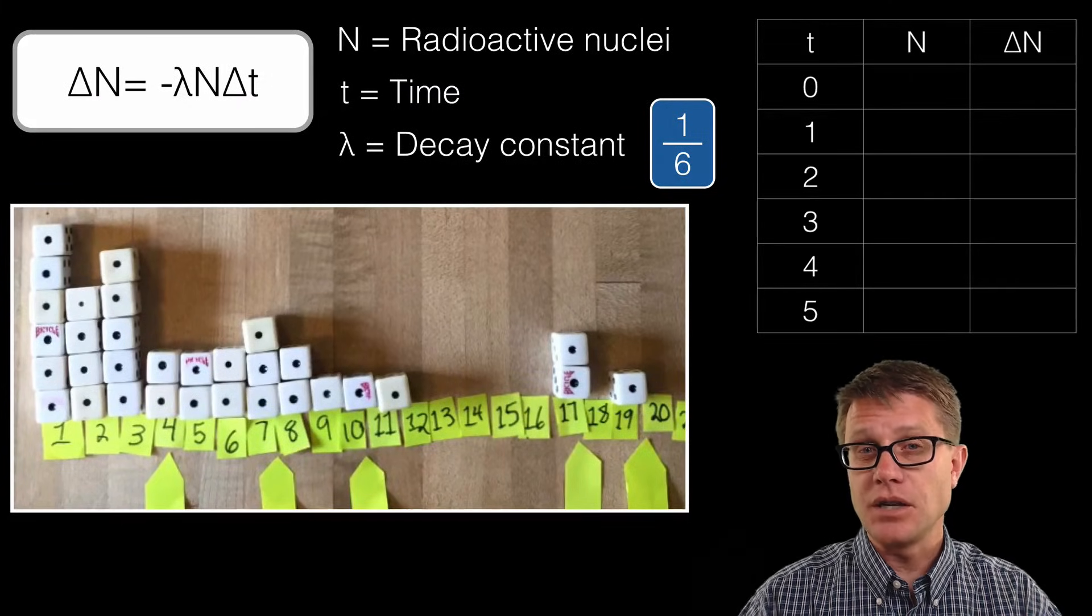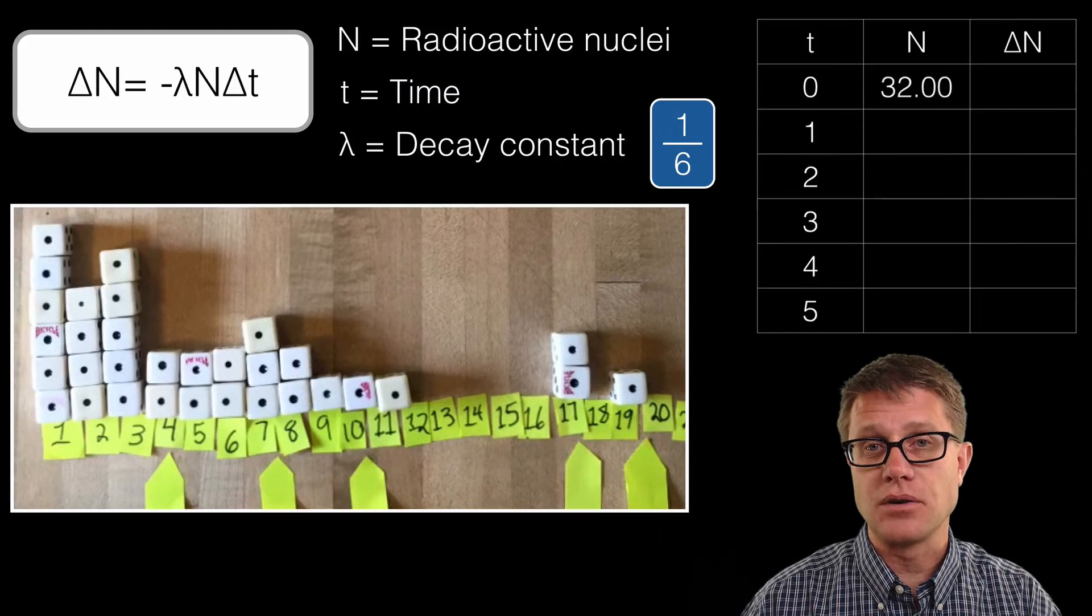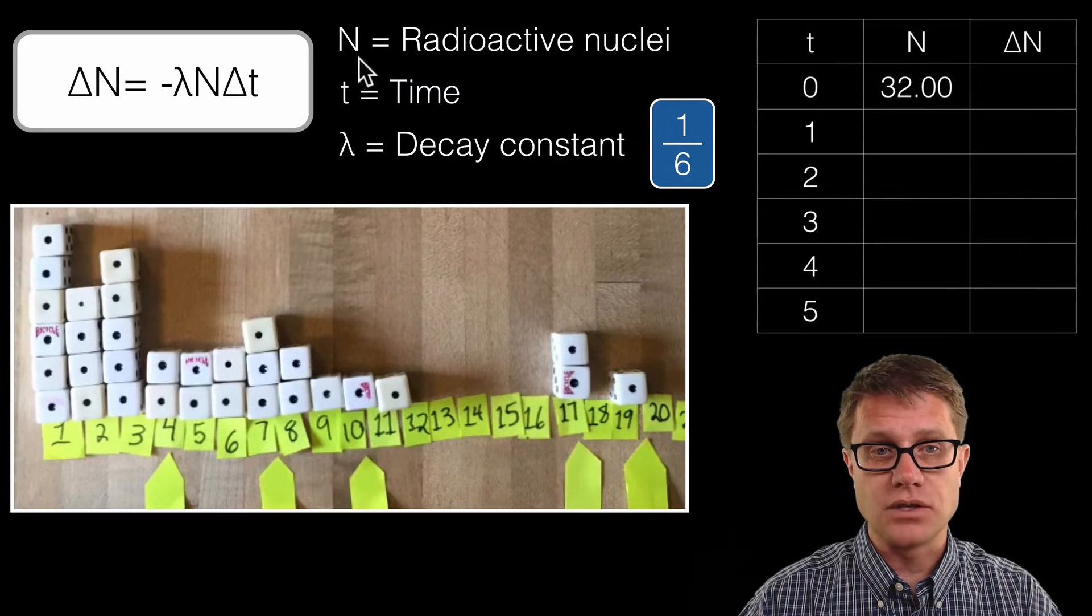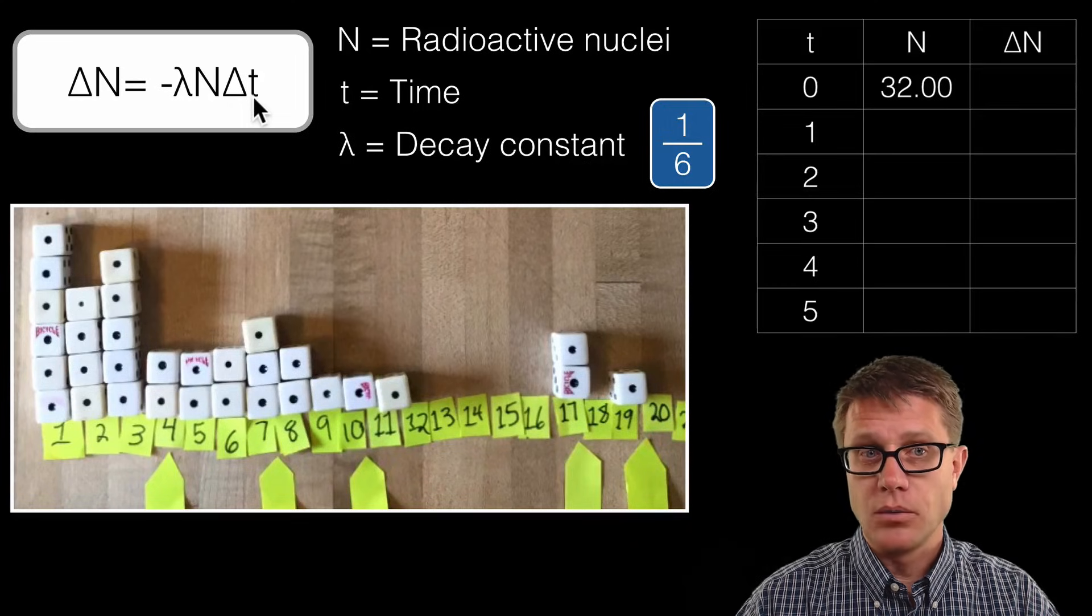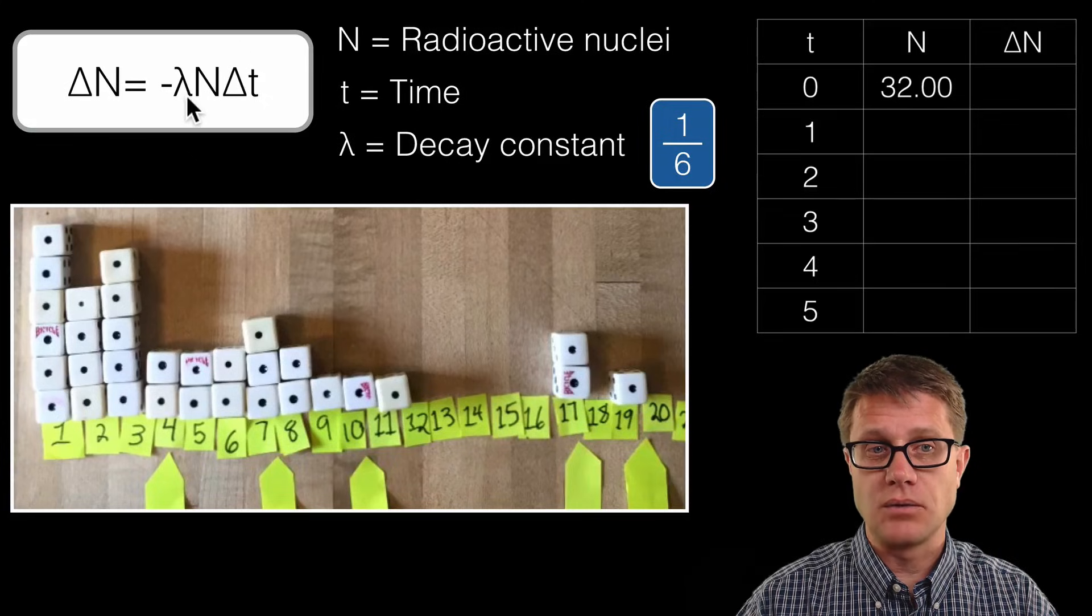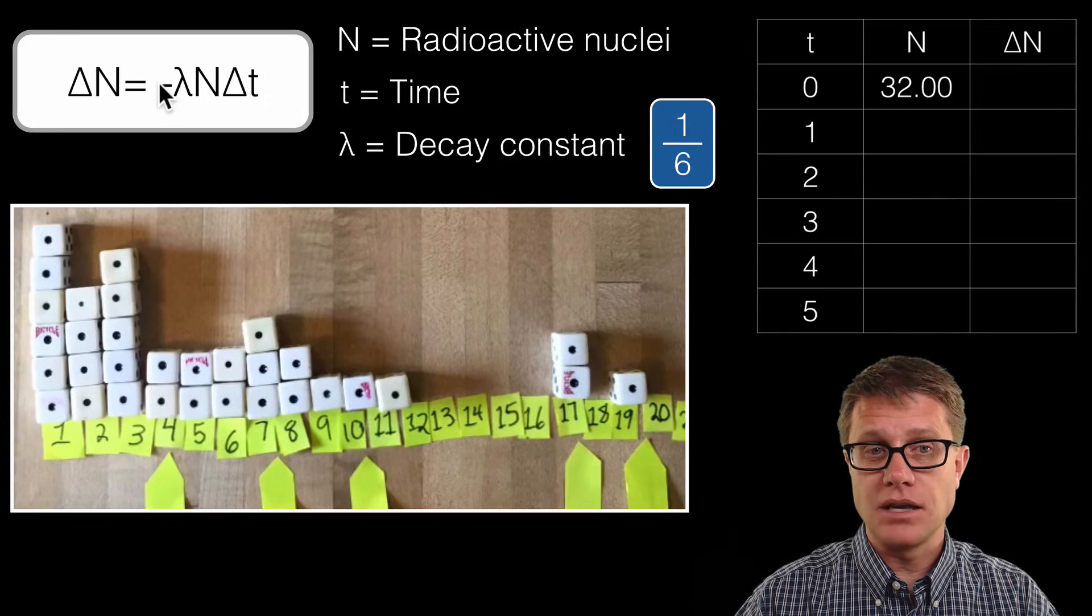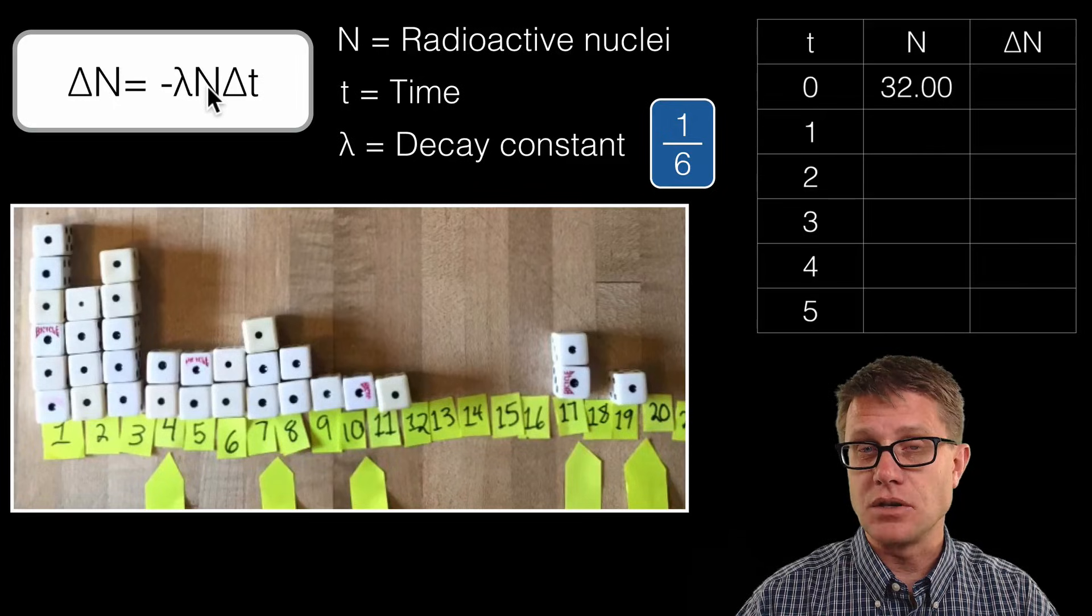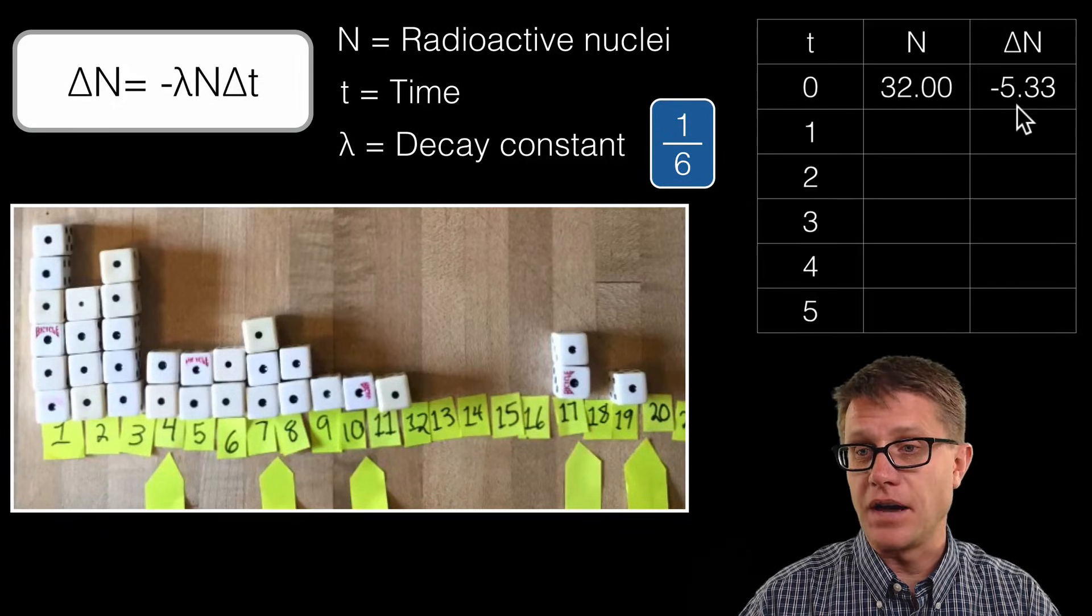So at time 0, how many radioactive nuclei did we have? Well, our N value was 32. So let me walk you through this formula. What is our time going to be? It is going to be 1. What is going to be our N value? It is 32, so 1 times 32. And then what is our decay constant? It is 1/6. So it is going to be negative 1/6 times 32. So what is that value? It is going to be negative 5.33.